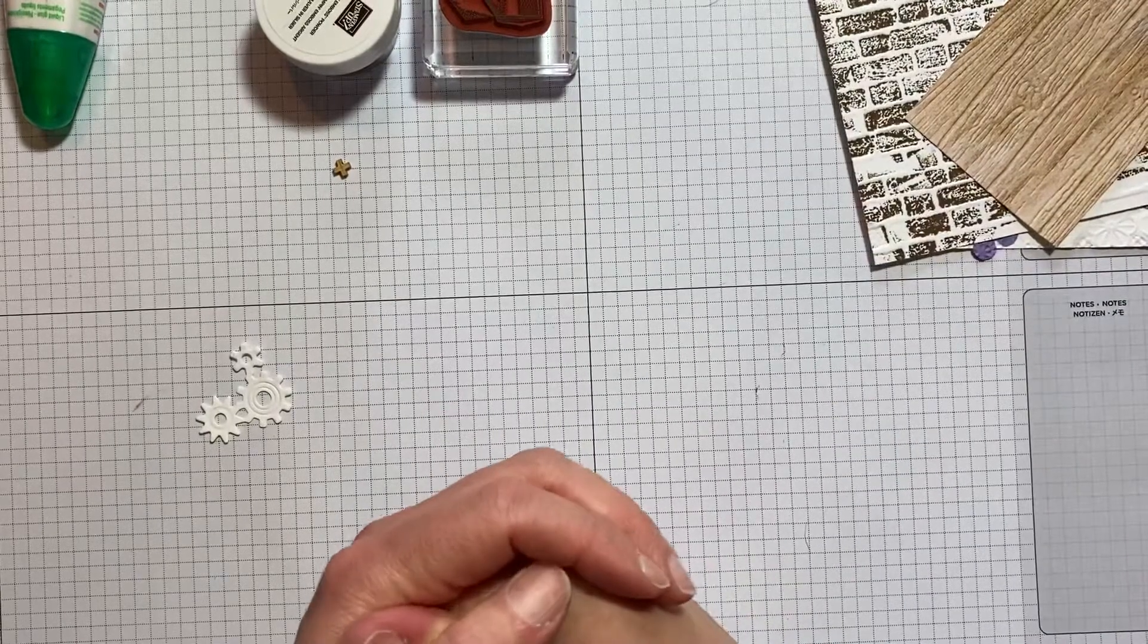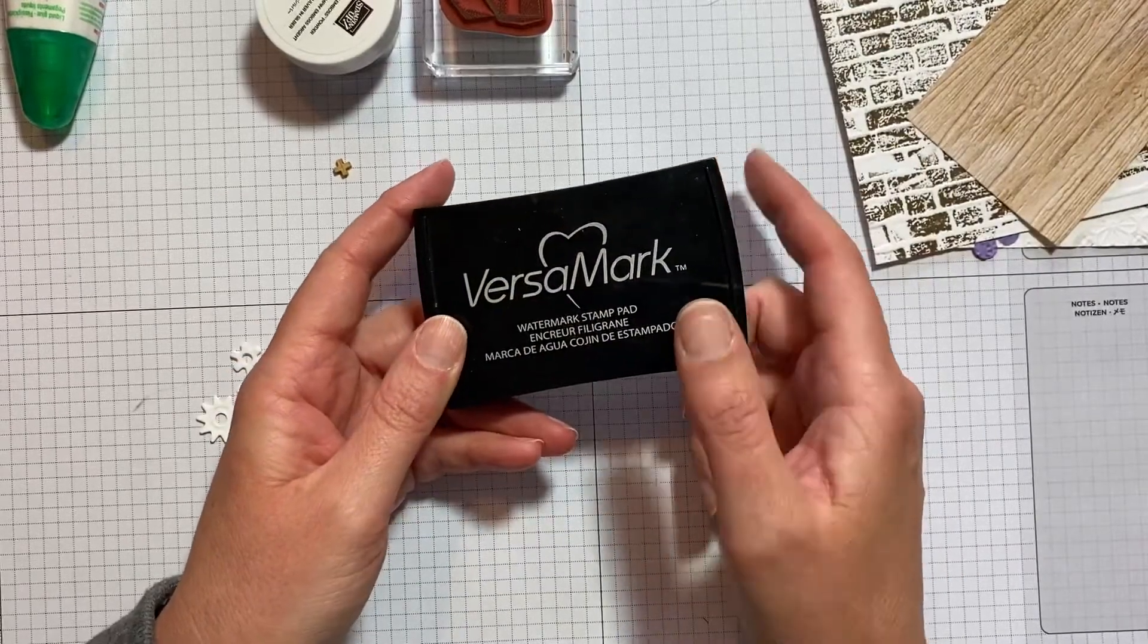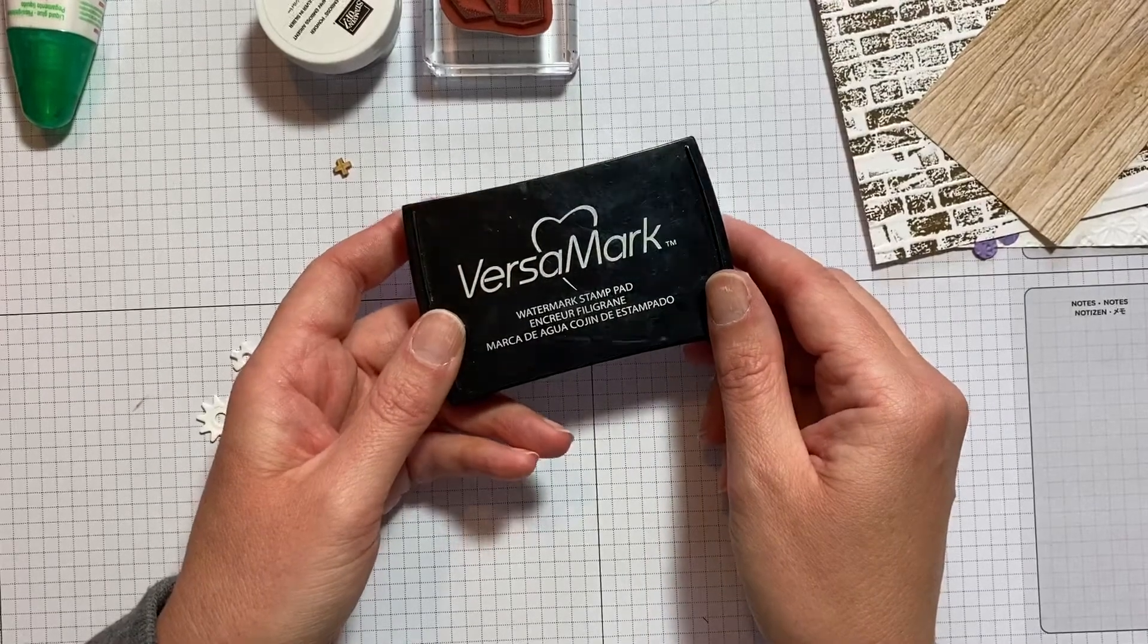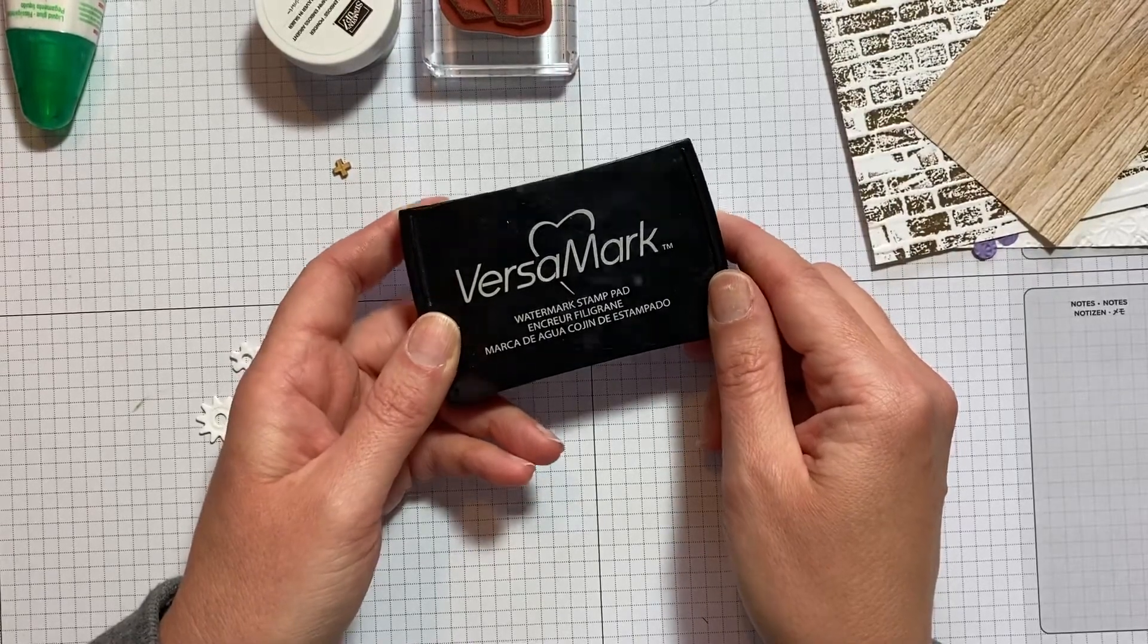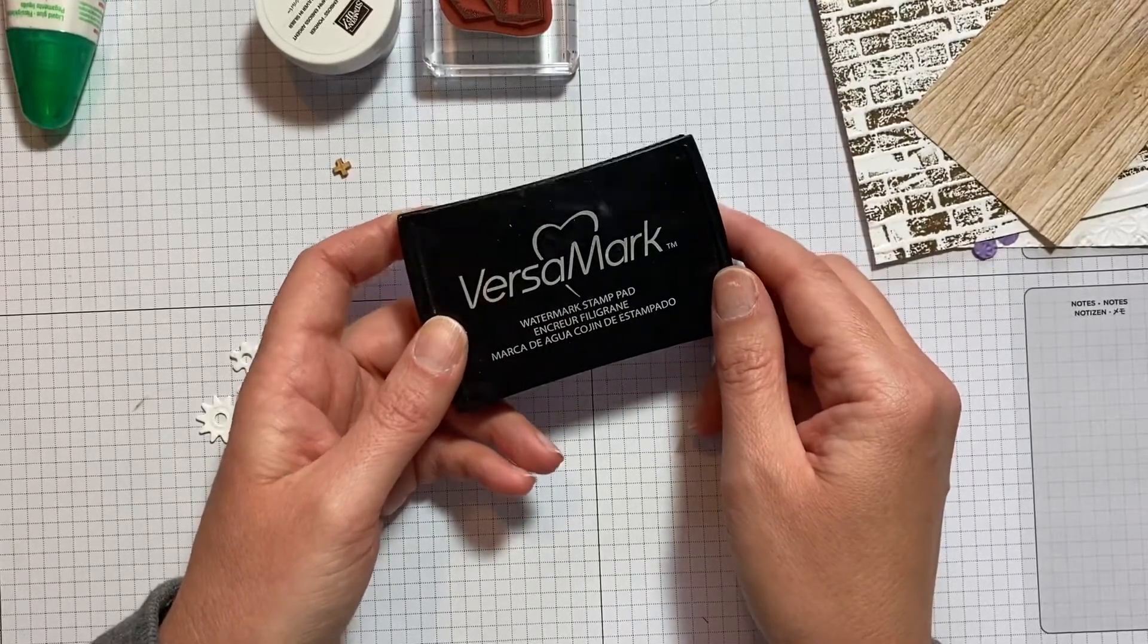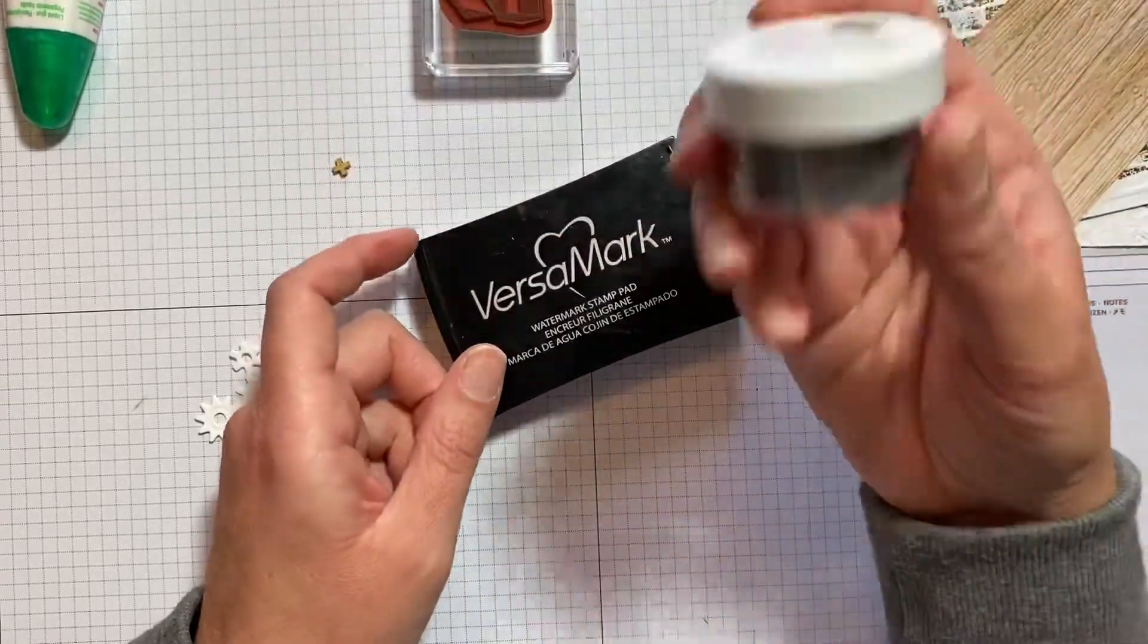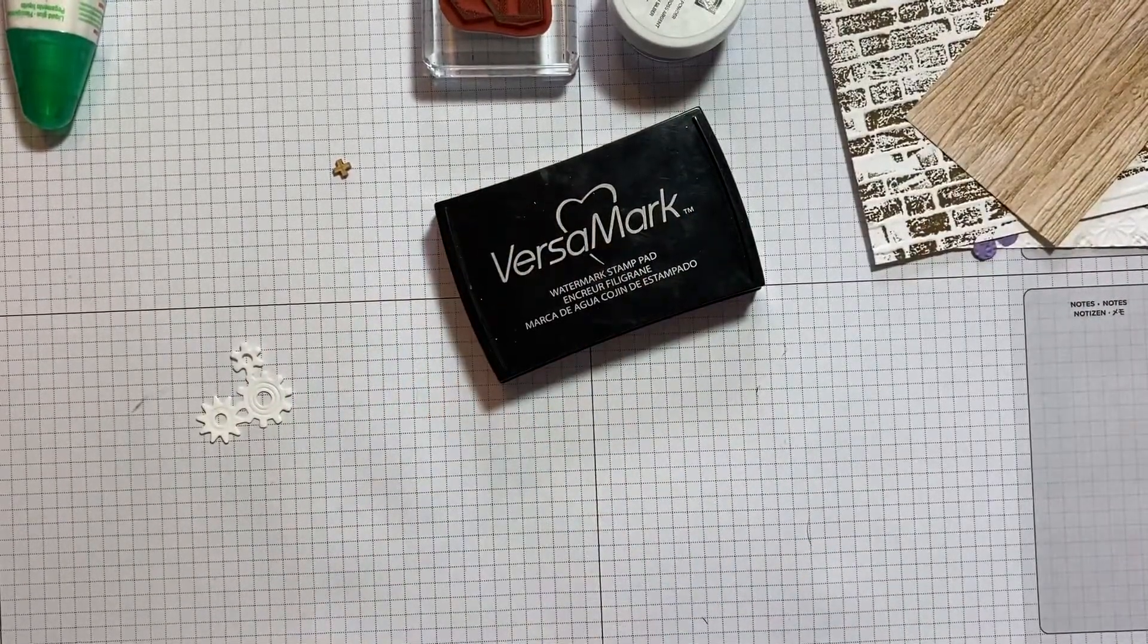Before we move on, we'll just go through everything that you need to be able to heat emboss. First of all, you need a VersaMark pad. If you've not seen my lesson on inks, I talk about this a little bit more in that lesson, but basically it's a sticky ink. We're going to apply sticky ink to the cardstock, the powder is then going to stick to the ink, and then when we use a heat tool we're going to melt it and it's going to fix in place. So that's the first thing we need. The second thing we need is the powder. I've got a silver one here to show you, and of course the heat tool.